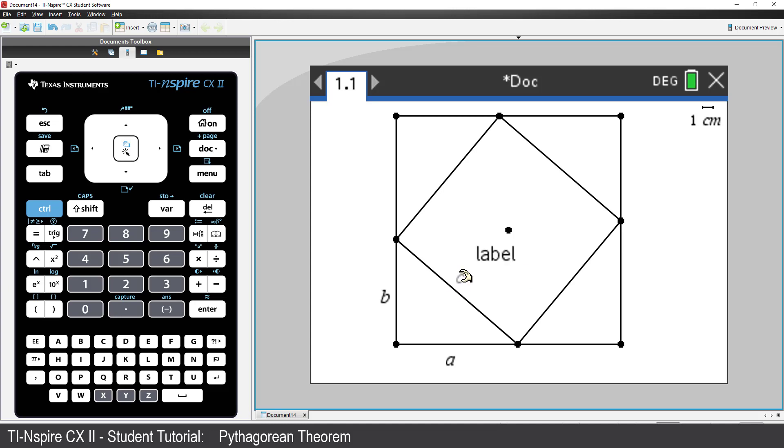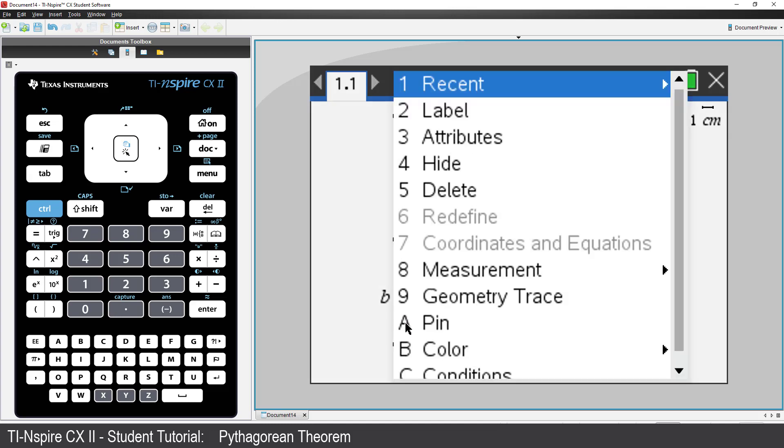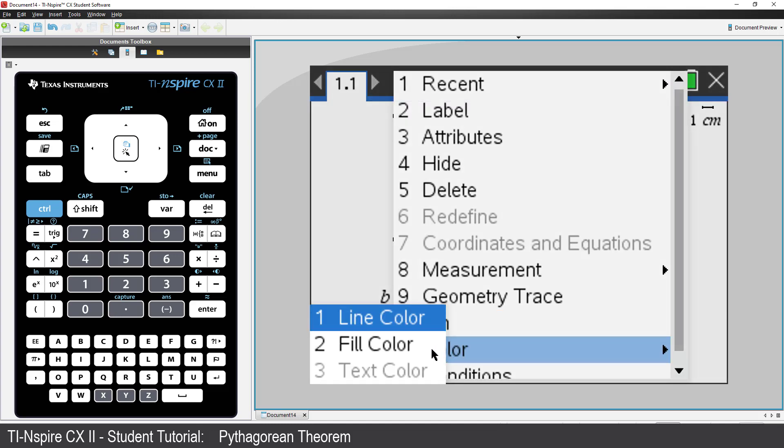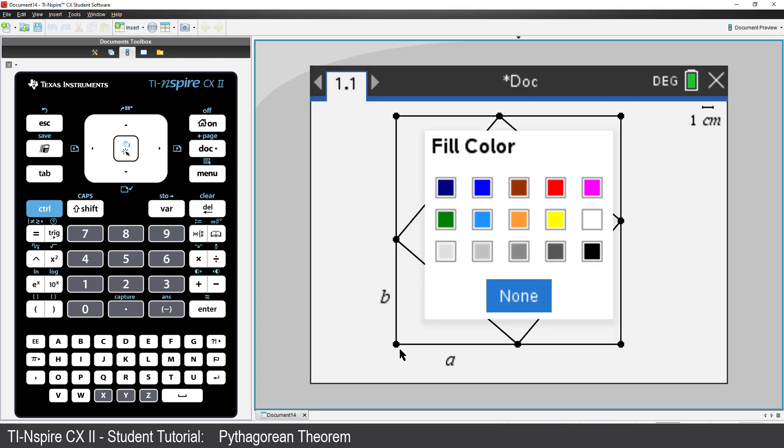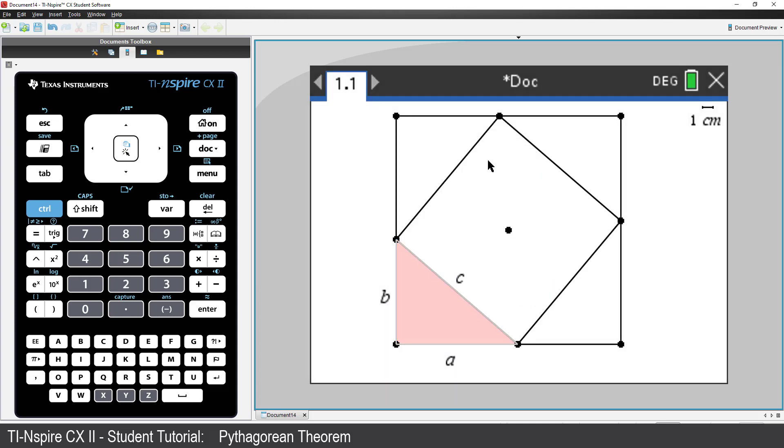We can colour the triangles to make them stand out. Hover the mouse back over a triangle. You may need to press Tab to select Triangle. Then press Control followed by Menu. Colour, then fill colour. Select a colour and press Enter. Now go ahead and fill in the remaining triangles in the same colour.